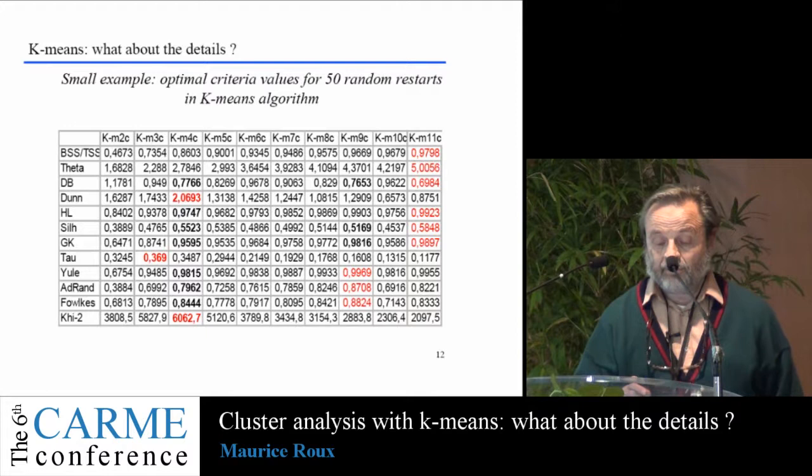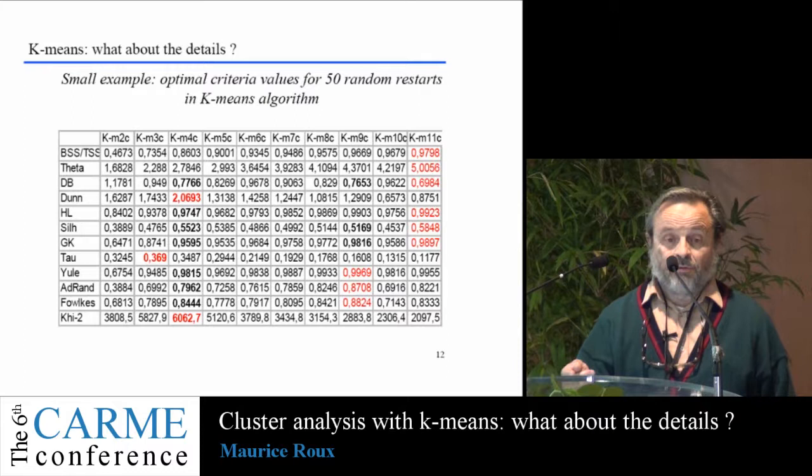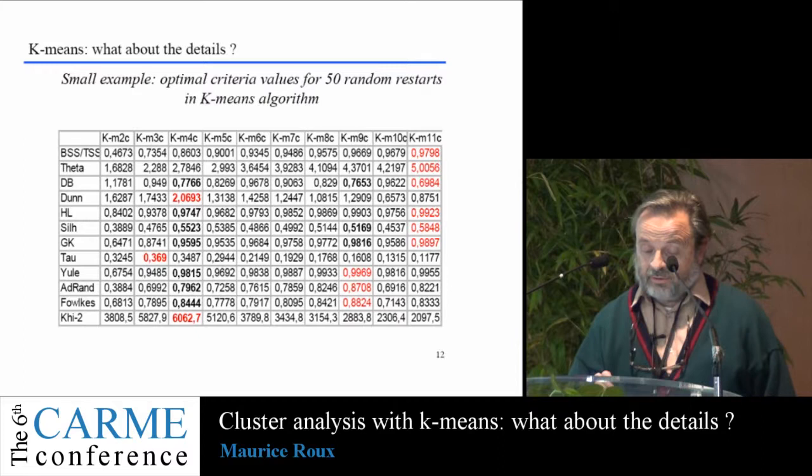You can see that the first row indicates the classical between-sum-of-squares criterion, and this criterion always increases with the number of clusters. So it is not interesting for determining the optimal number. The same thing applies to the theta criterion.